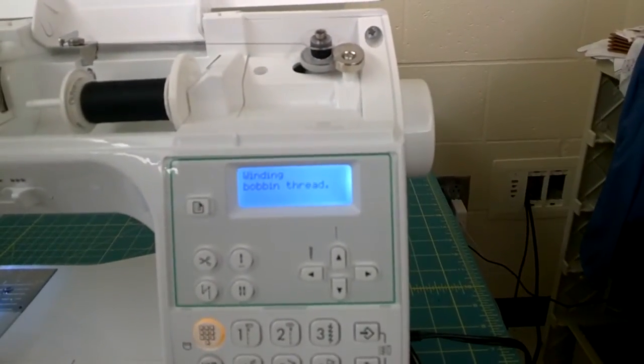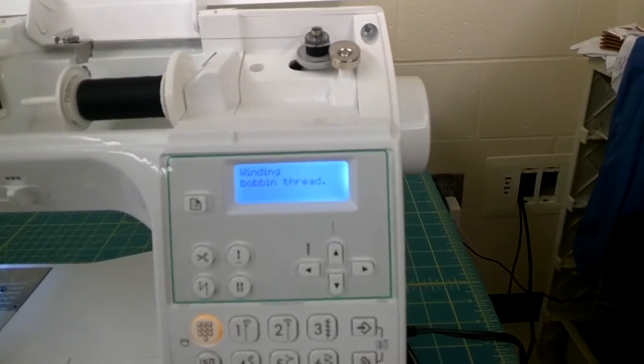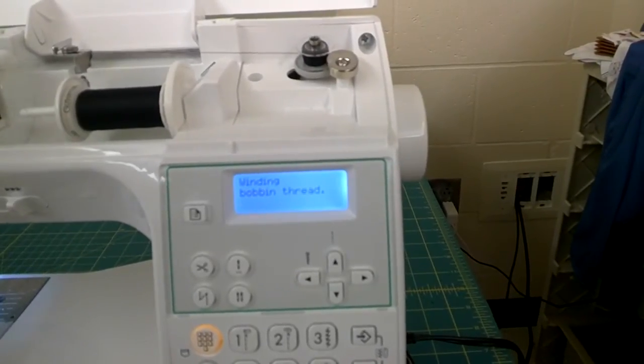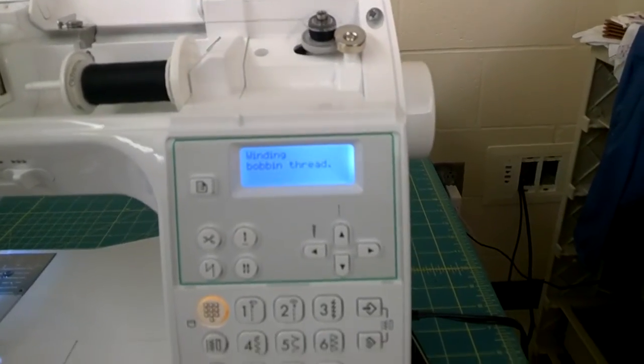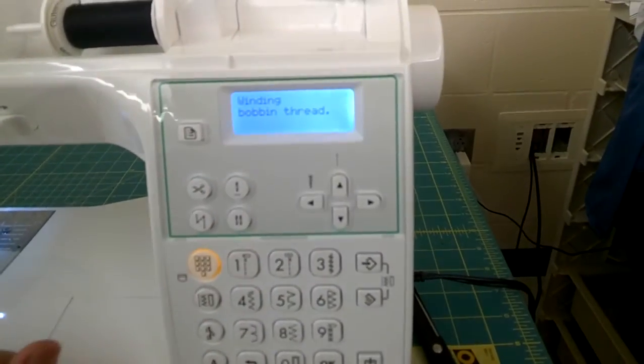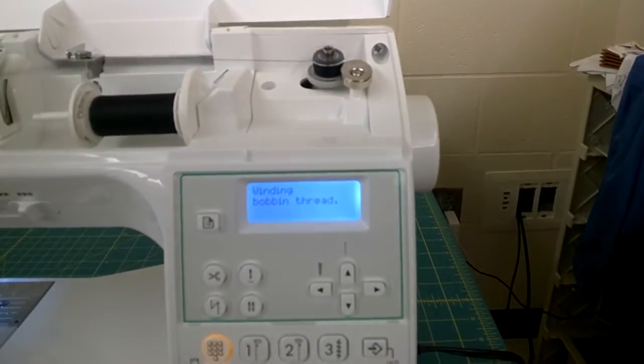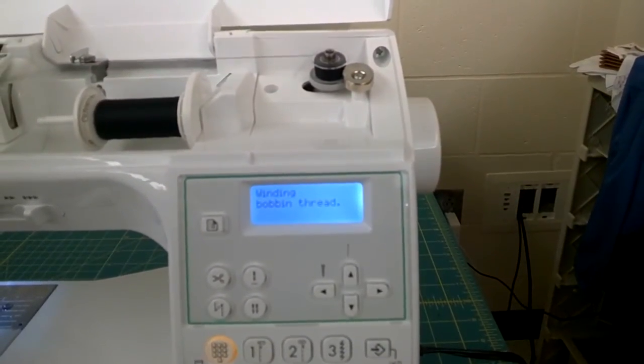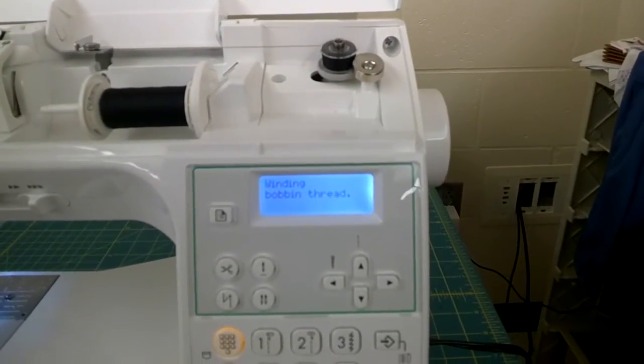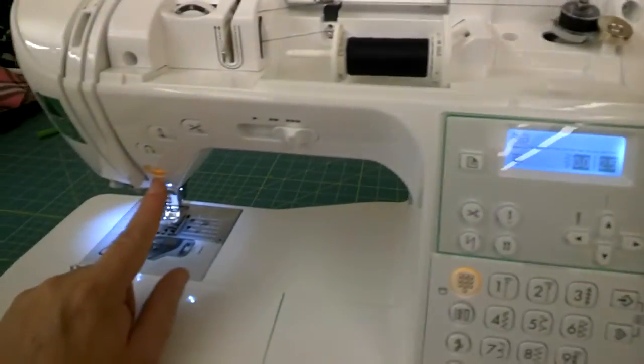We're going to watch as the machine winds a fabulous bobbin. It's going as fast as it can. It's nice and smooth and straight, which is what you're looking for. It's not getting caught on anything. If you look on here on the digital screen, it says winding bobbin thread. Now as the bobbin gets full, it's going to start slowing down. You're going to hear it gets slower, it's getting slower, and then it stops.